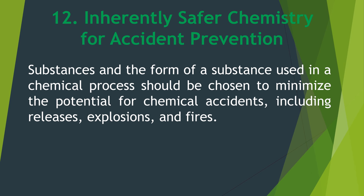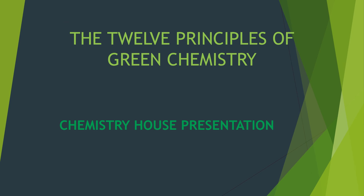Substances and the form of a substance used in a chemical process should be chosen to minimize the potential for chemical accidents, including releases, explosions, and fires. This was a Chemistry House presentation.